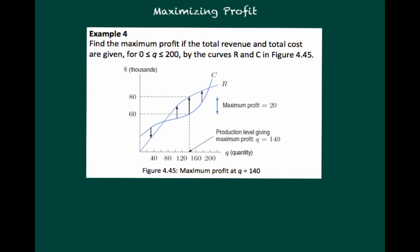So, thinking from a graphical perspective, can we find the maximum profit if the total revenue and total cost are given from the quantity 0 to 200, given by the curves revenue and C in this figure? Well, we've already talked about how we can follow the cost function, and at some point, the revenue function will cross the cost function, and that's our break-even point. In this region here, costs were higher than revenue, so we were losing money. But at this point, revenue becomes higher than cost.